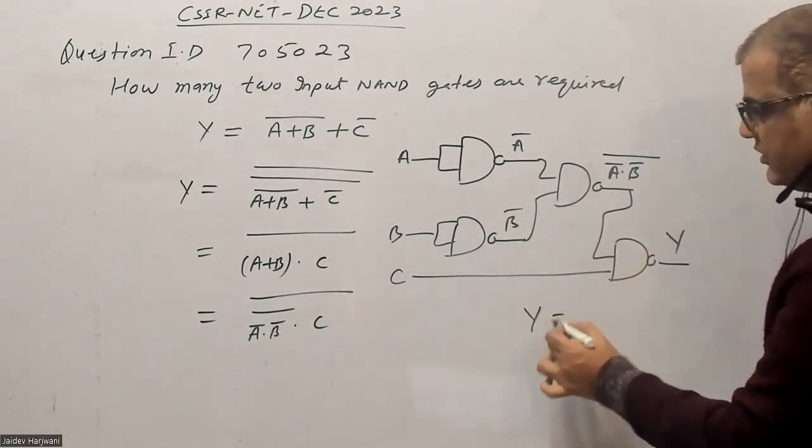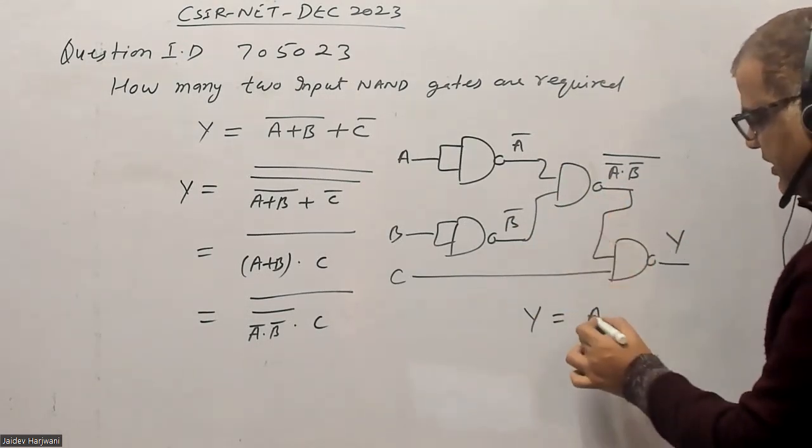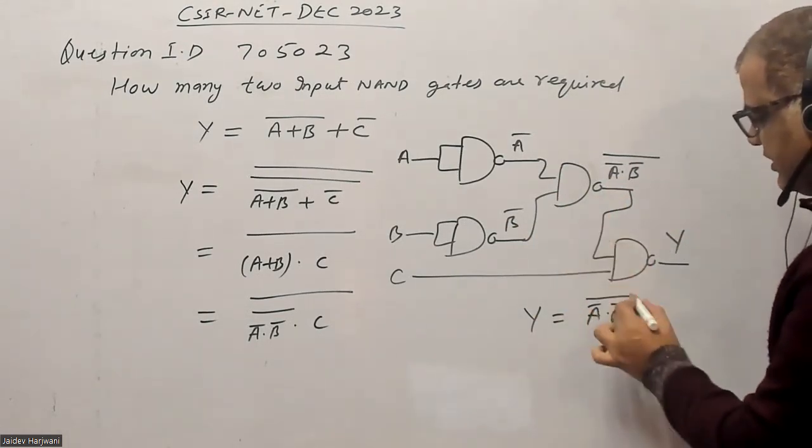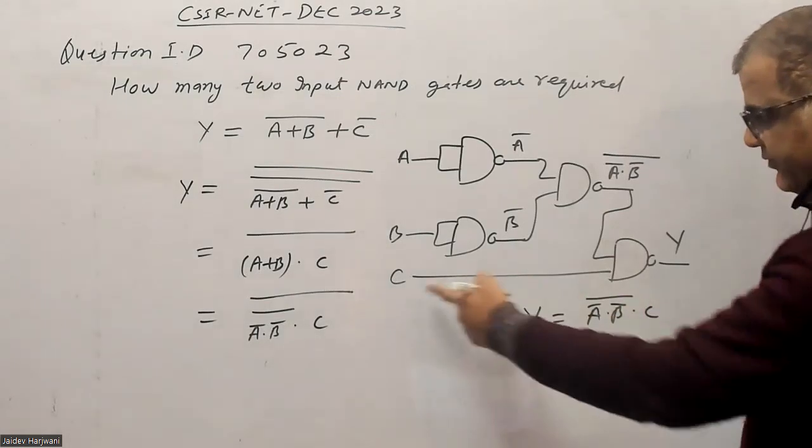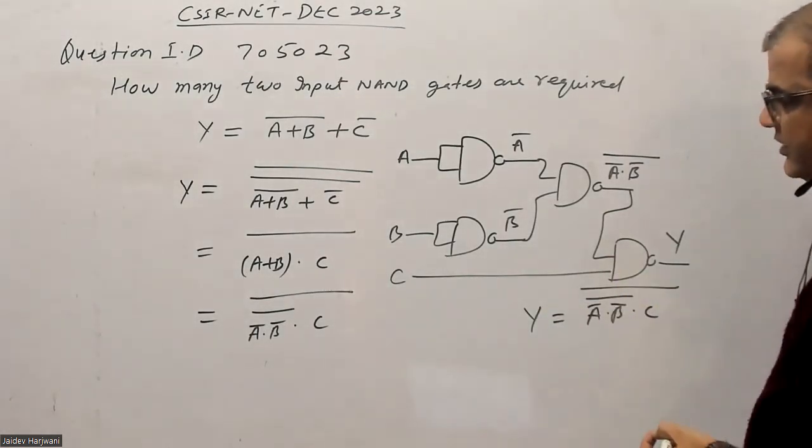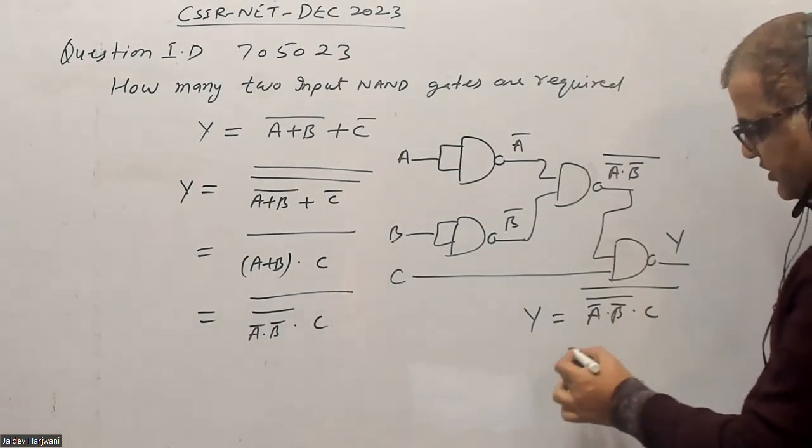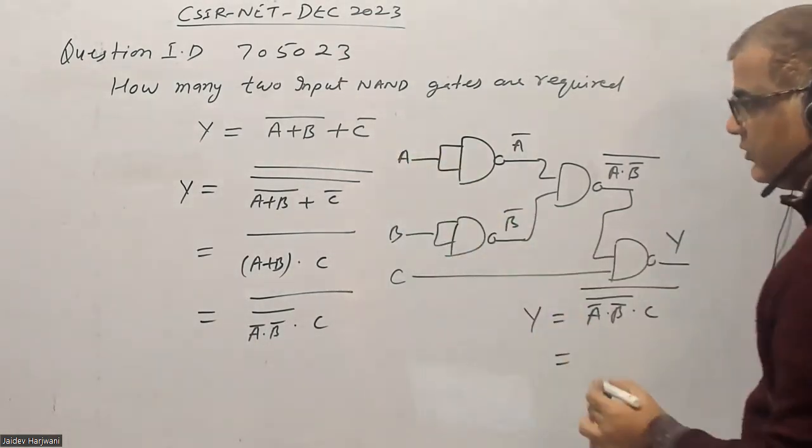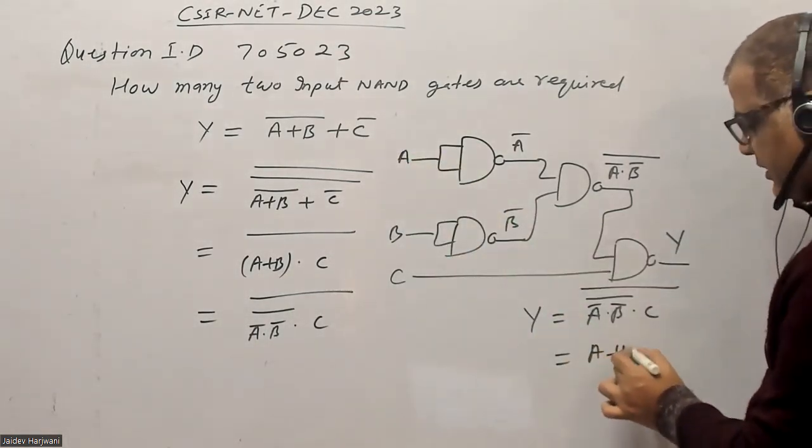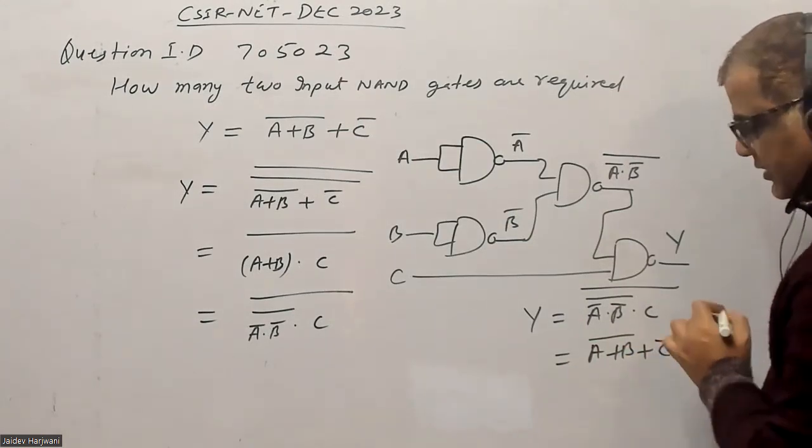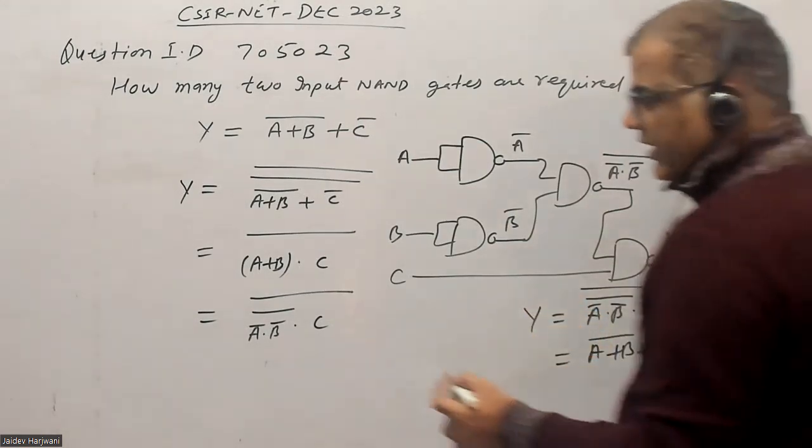And bring C from here and this will give you the required Y which is equal to A bar dot B bar dot C bar and C coming from here and then whole bar. So basically in order to implement this function, this function is equal to A plus B dot C bar plus C bar.